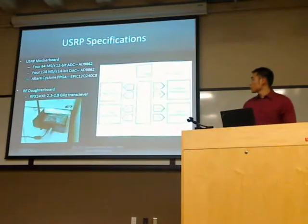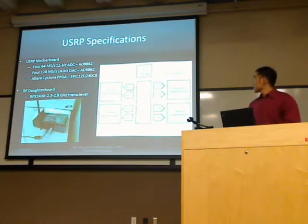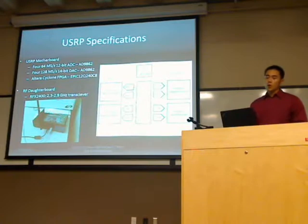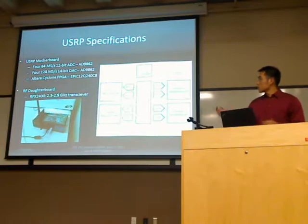This is the USRP board. On the transmitter side, a host computer sends a complex data signal through to the USB controller, then into the FPGA where it is up-converted, then through a D-to-A converter, and then to the RF daughter board, which transmits at 2.3 to 2.9 gigahertz.